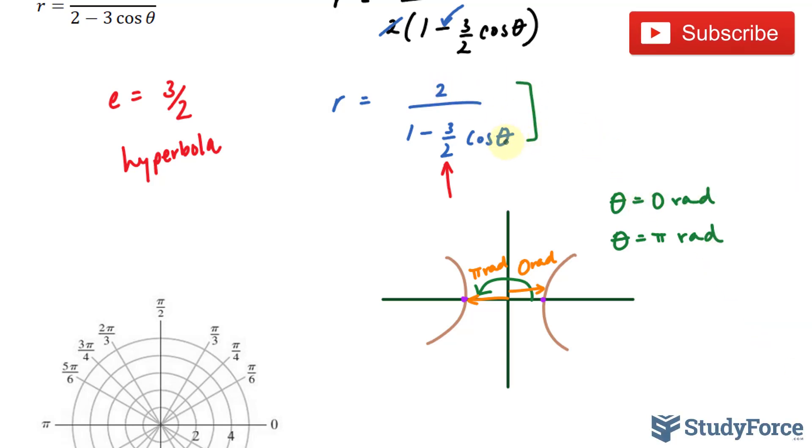So if you substitute zero into here, you should end up with an r value that is negative four. And if you substitute pi into here and evaluate, you should end up with an r value that's equal to four over five.